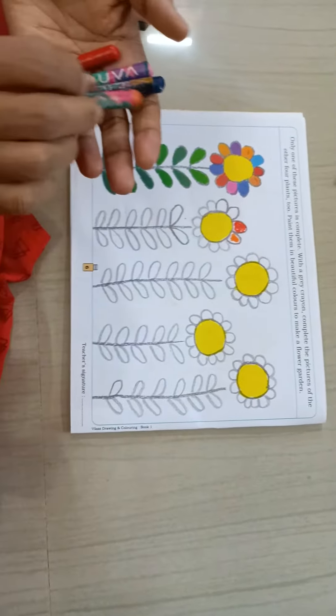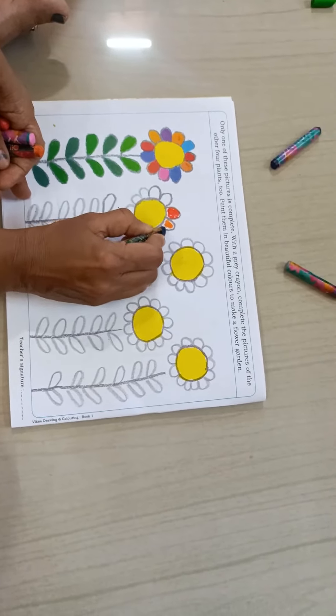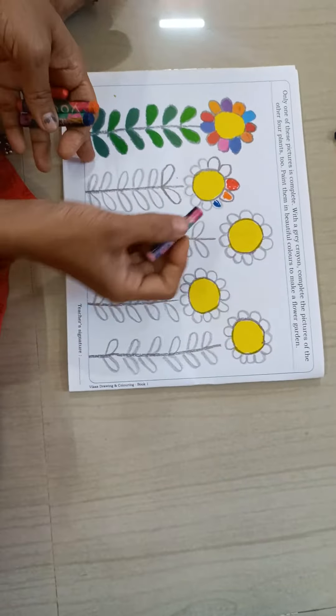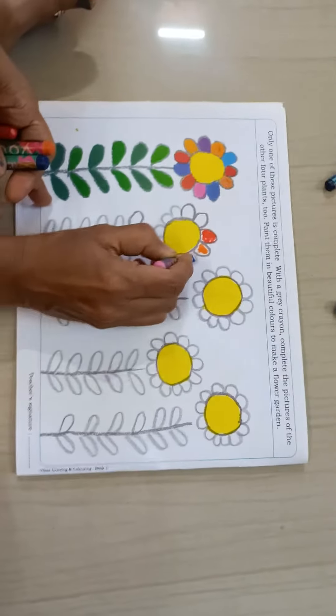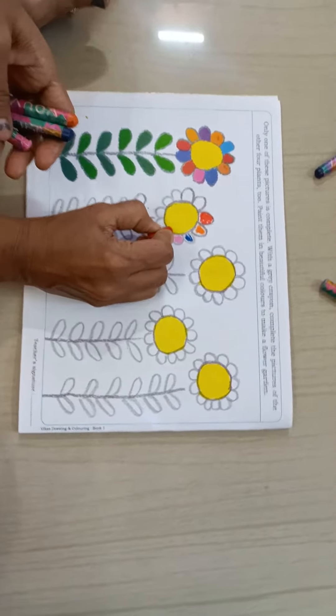Then after orange we have to give this dark blue color here. Then after that we have to give pink color here. Then again start with the red color.